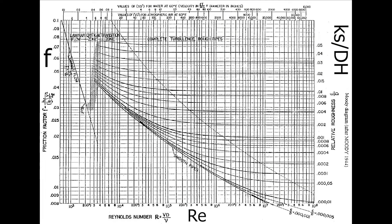The Darcy-Weisbach friction factor may be determined graphically, for example from the Moody diagram as shown here, or from the Colebrook-White formula for turbulent flow.